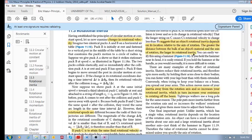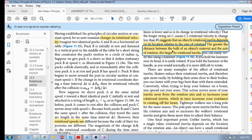So let's look at this now. It says the results suggest that an object's rotational inertia, its resistance to change its rotational velocity, depends on its location relative to the axis of rotation. The greater the distance between the bulk of an object's material and the axis of rotation, the larger its rotational inertia.